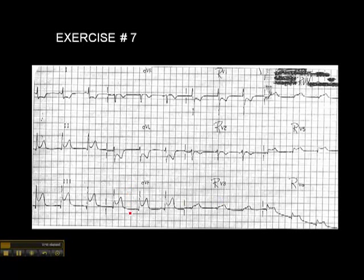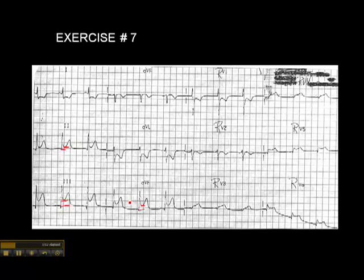Let's go through this from left to right. We'll look at lead 2, and in lead 2 there's ST elevation here. Lead 3, there's ST elevation as well. And in AVF, there's ST elevation as well. So we clearly have criteria for an inferior wall MI.